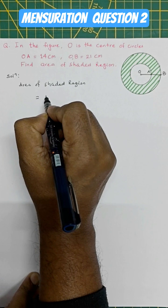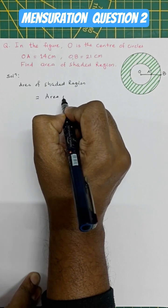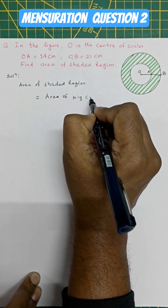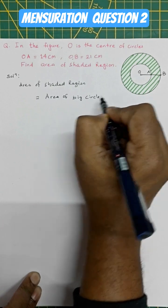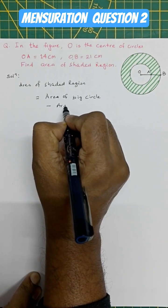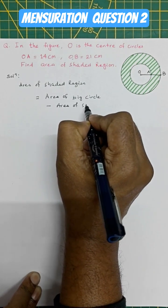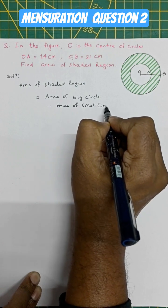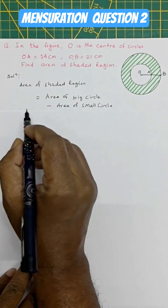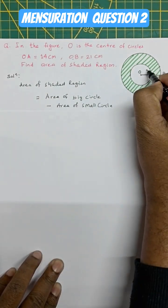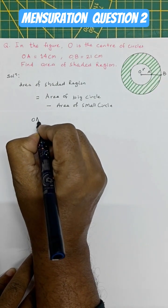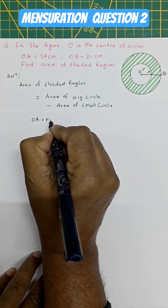is equal to area of big circle minus area of small circle. Now OA is small r.